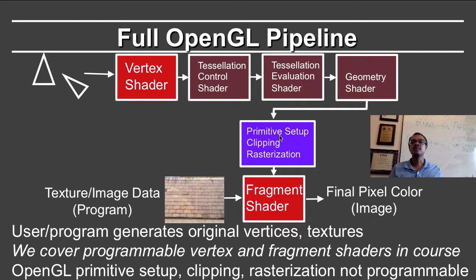In this course, we cover programmable vertex and fragment shaders. OpenGL, at this time, effectively only specifies the rasterizer, which is non-programmable. Everything else is determined by the user. Finally, that information comes to the fragment shader once OpenGL decides which pixels to turn on and off, where a triangle goes in the 2D screen.